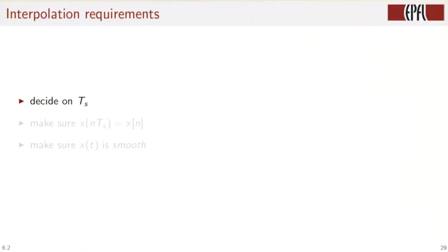So the requirements are, we have to decide on ts, the spacing between the samples in the continuous time function. We have to make sure that x at the location n times ts is equal to the sample values xn.